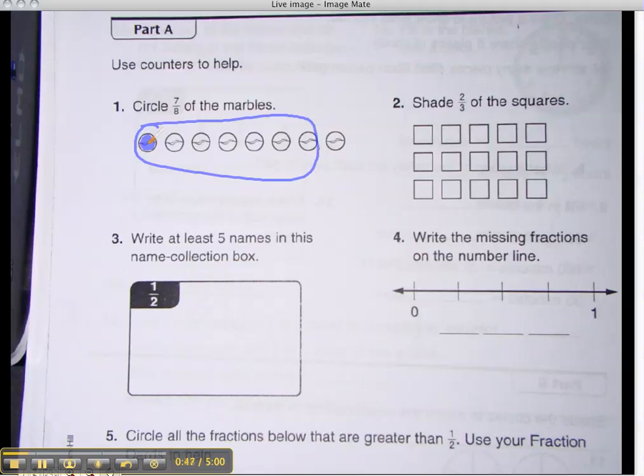Alright, number 2, shade 2/3 of the squares. Who would like to do that? Tommy, come on up. Let's see you shade 2/3 of those squares. You can go a little thicker if you want. Use the thicker one. There, now try it. It might be a little easier. See? Is that better?